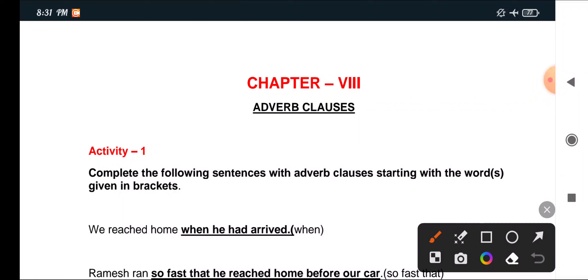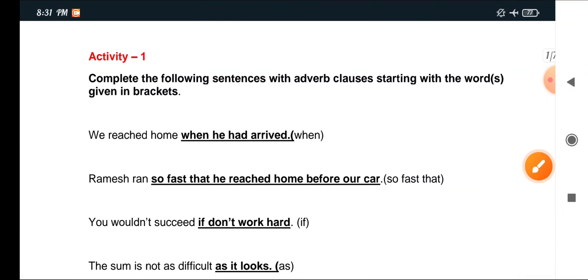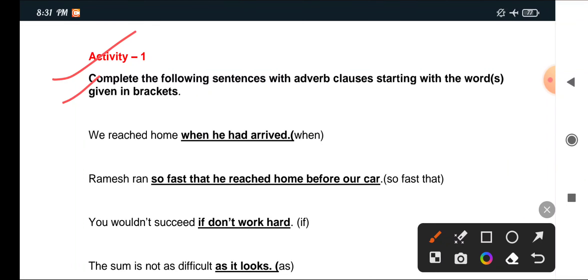English grammar chapter 8: adverb clauses. Activity 1: Complete the following sentences with adverb clauses starting with the word or words given in brackets. We reached home when he had arrived.